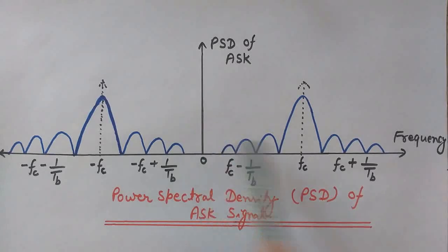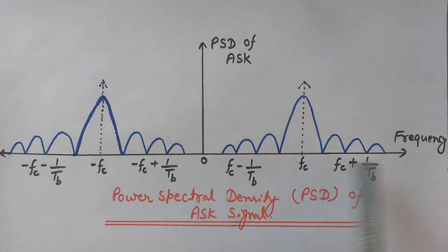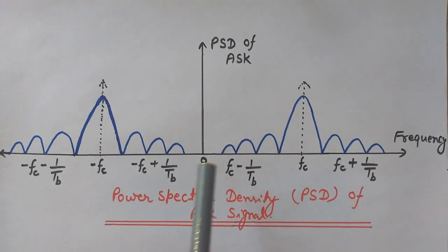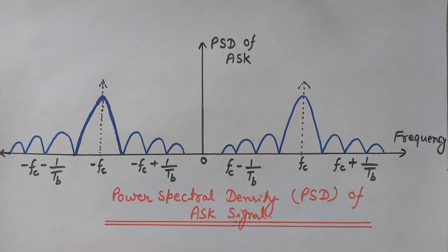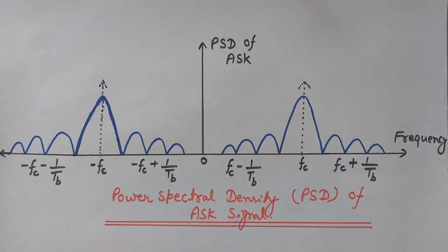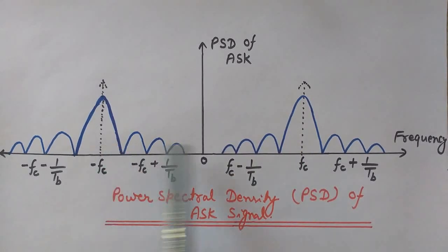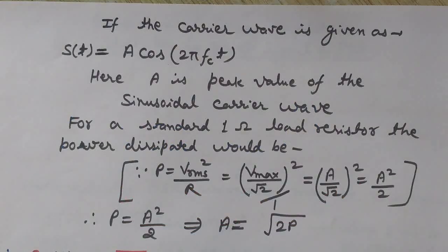In the PSD versus frequency curve of the ASK signal, you can observe that the spectrum has an infinite bandwidth. However, for practical cases we define the bandwidth as the bandwidth of an ideal band-pass filter centered at fc, having output up to 90 percent of the total average power content of the ASK signal. The positive and negative sides of the spectrum are symmetrical.